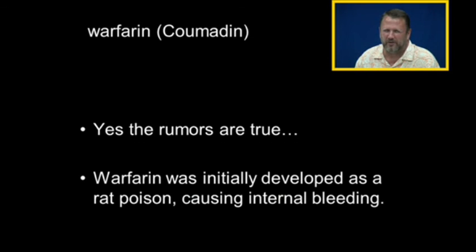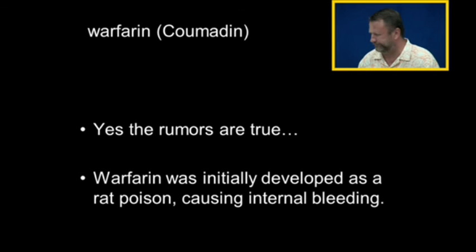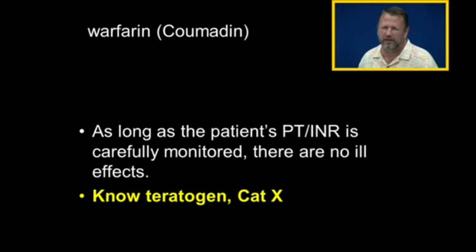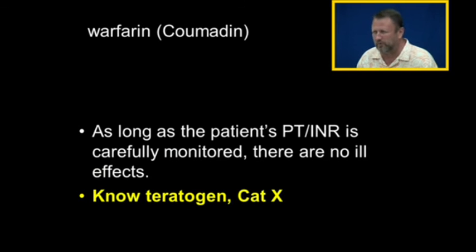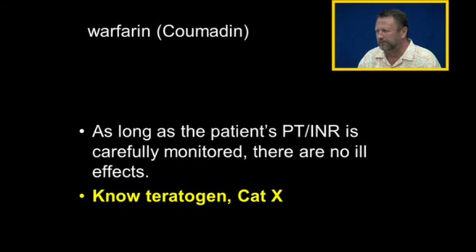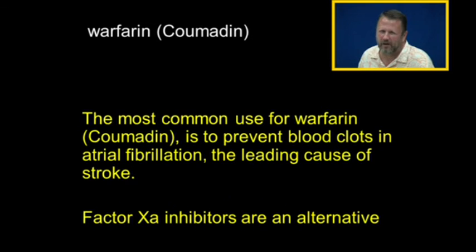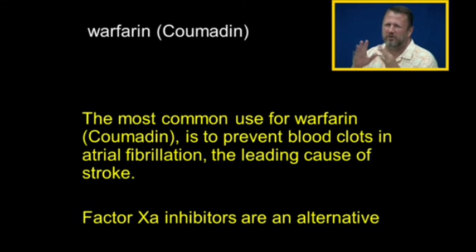The Wisconsin Alumni Research Foundation developed coumadin to be a rat poison, because they thought if it interfered with clotting factors in a rat's liver, the rat would bleed to death. The rat poisons are called coumarins. As long as we carefully monitor the PT/INR in the patient, there are no ill effects. We can give too much coumadin, causing excessive bleeding, and we have to be on the lookout for people who have GI bleeds. Coumadin is a known teratogen — it does cause birth defects and is absolutely contraindicated in women who might become pregnant.